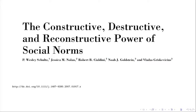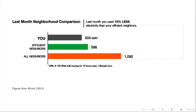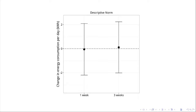A great example is this field experiment about the power of social norms. They measured people's electricity consumption and gave them information about their consumption relative to their neighbors — something like: 'You are using less energy than your efficient neighbors, and less than all of your neighbors.' They tried to measure whether this would change the amount of electricity people used. They found no effect after one week or three weeks — which seems uninteresting, except they were actually much more clever than that.